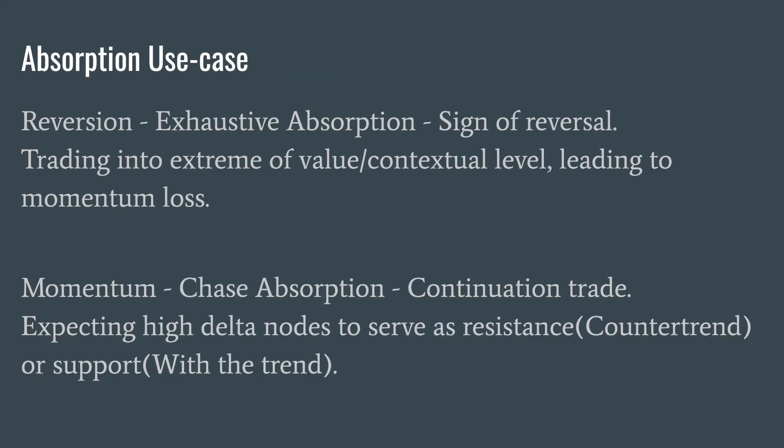So the absorption use cases: first off, we have reversion. This is the exhaustive absorption that we've already gone over — the sign of reversal. We're trading into an extreme of value or a key contextual level, and this is going to lead to a momentum loss where we take it back to the mean. Alternatively, we have the momentum version: the absorption chase. This is a continuation trade. We're going to be expecting our high delta nodes to serve as resistance when they're counter-trend and support when they're going with the trend.